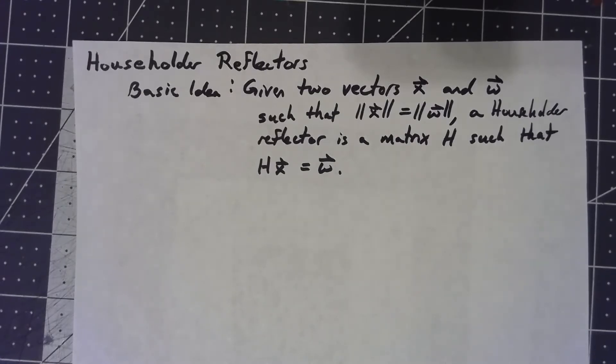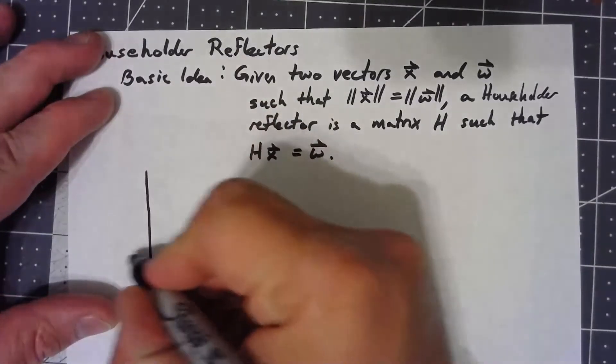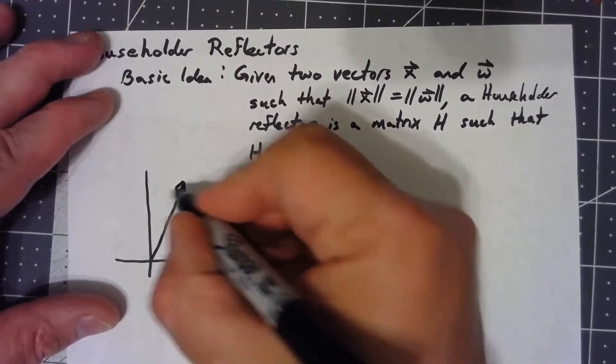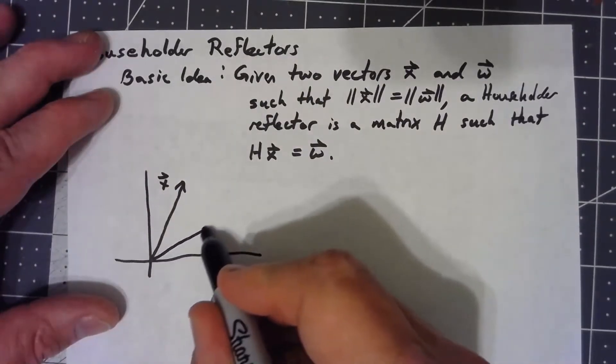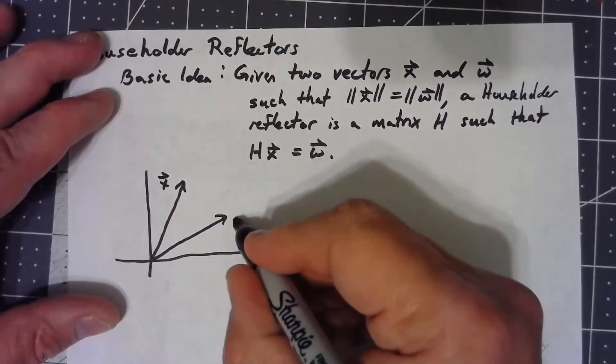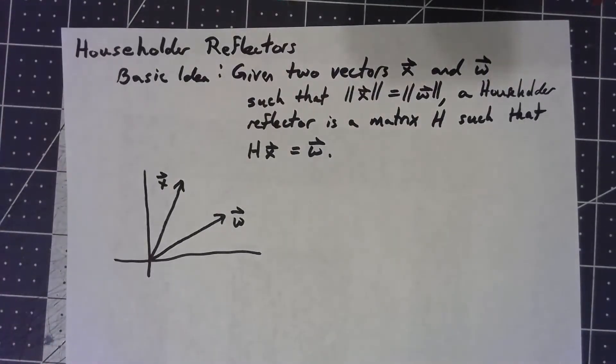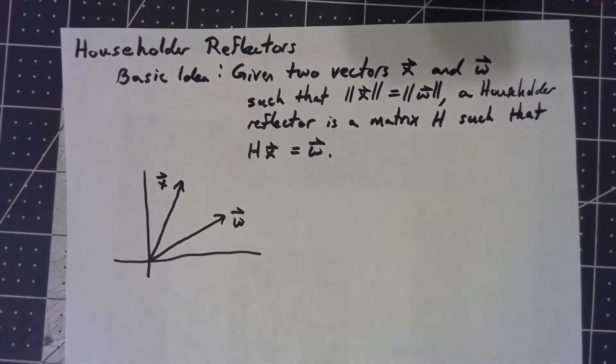The basic idea is we start with two vectors x and w that have the same Euclidean norm. Let's say we've got a vector x up here like this and a vector w maybe like that. We want to find a matrix that reflects x onto w.